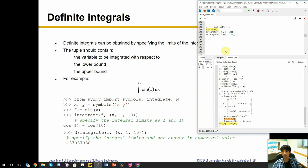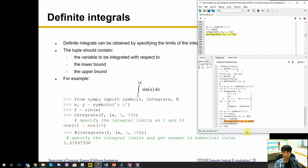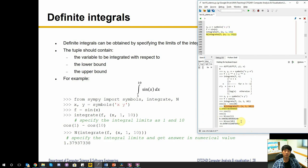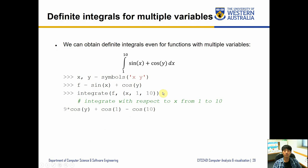If we want a numerical answer we can pass the result into the function N(). For example, N(cos(1)) gives us 0.54, and N(cos(10)) gives us -0.83. So 0.54 minus -0.83 gives us the numerical value of the definite integral. If you want the answer as a numerical value you will have to convert it using the N function; otherwise you'll still get the symbolic form.